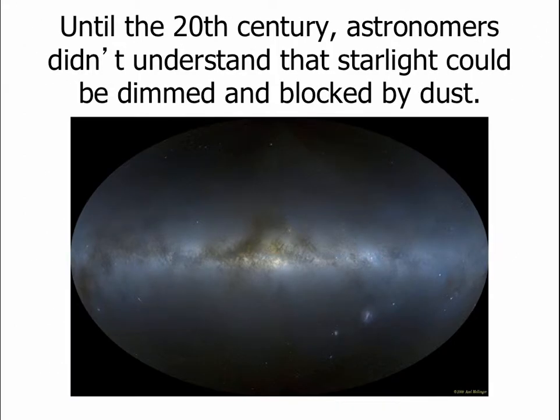The reason that William Herschel didn't get the proper size of the Milky Way — one of the reasons his method didn't work — is because he did not know that there was dust. And as we talked about under star formation, dust blocks and dims starlight.